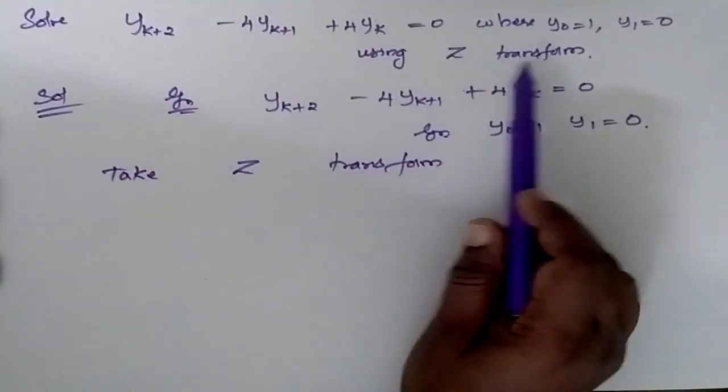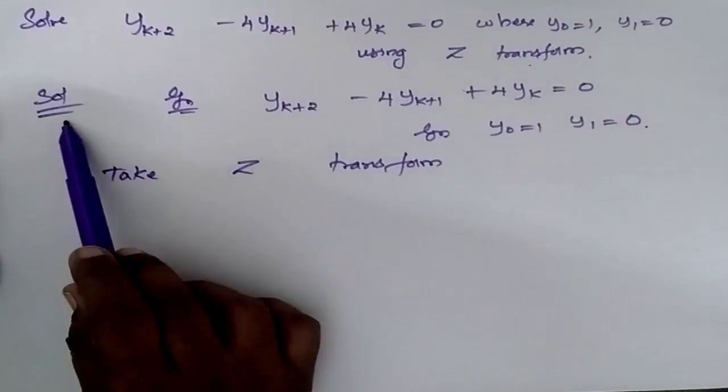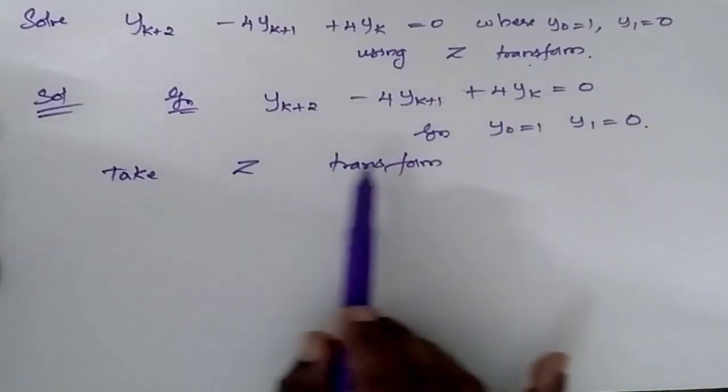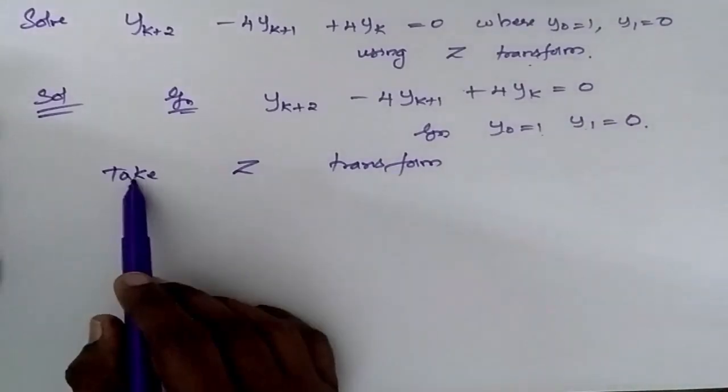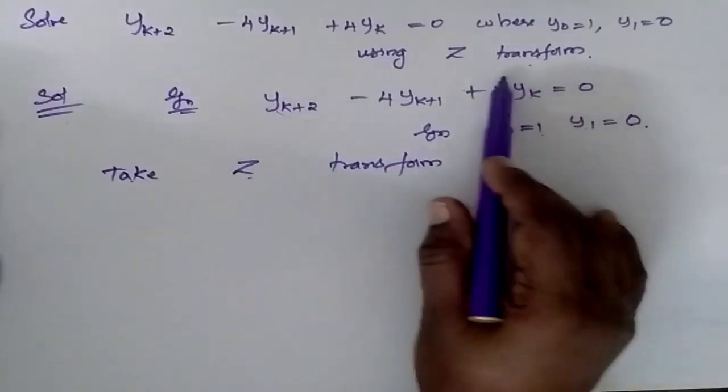Solve the given equation using Z transform. We are going to solve this by Z transform given Y0 is equal to 1 and Y1 is equal to 0. So we are going to take Z transform on this equation.